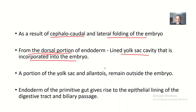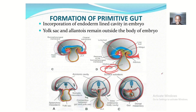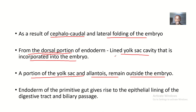A portion of the yolk sac and the allantois remain outside the embryo. The yolk sac and allantois are basically outside the embryo, as the main embryo body is distinct from these structures.